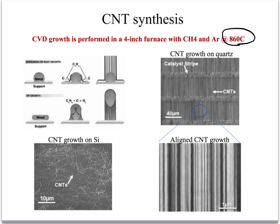There are two mechanisms where nanotube growth could happen. The first is root growth, where the metal catalyst stays stationary and the nanotubes supersaturate and form from that metal support. The second method is tip growth, where the metal catalyst actually moves up as the nanotube grows.